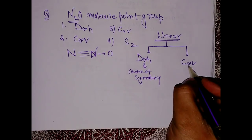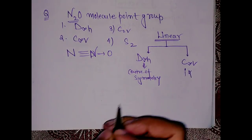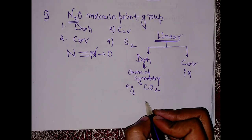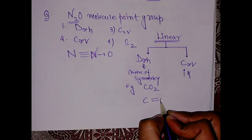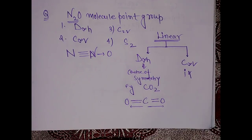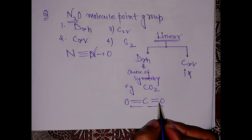D∞h in those cases which have center of symmetry, that means both sides there should be the same group. For example, let's say CO2 molecule. This is C double bond O double bond O. There is a center of symmetry - the same atom is on both sides, oxygen and oxygen.